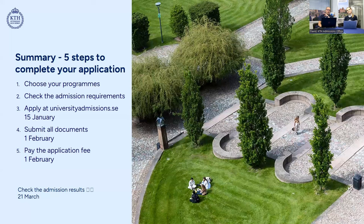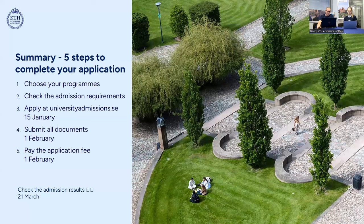Always go with passion when choosing programs — it's two years of your life, and maybe your entire work life after that. You want to do something you really enjoy and are interested in. Check the admission requirements. Don't forget the application deadline — always think 15th of January, and then remember there's that other 1st of February deadline when you have to pay and submit the final documents. The results come out on the 21st of March — that's when you find out your results.